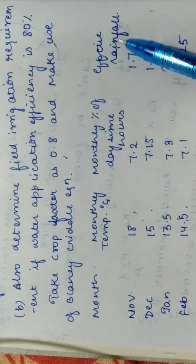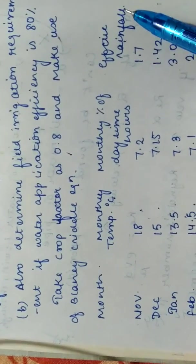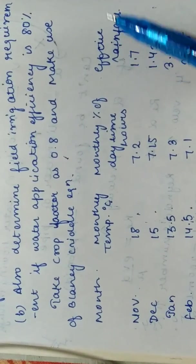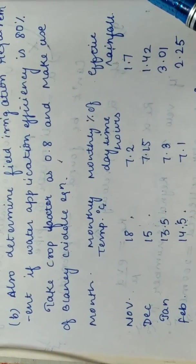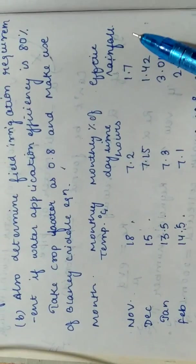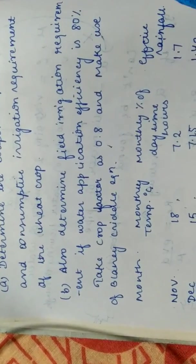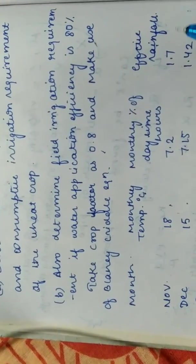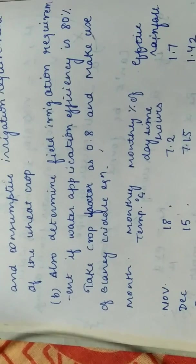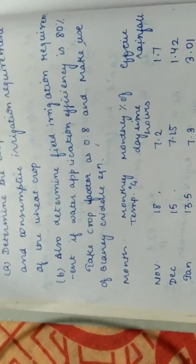and all of that rainfall is useful for the plant, excluding all the losses. So now I need to supply only the remaining 5 centimeter. So that is what is consumptive irrigation requirement. How much you need to give to that particular field in addition to the effective rainfall.